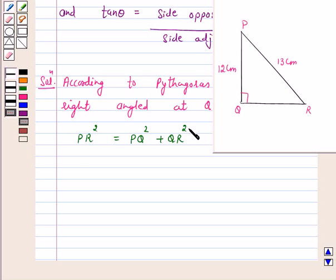13 square is equal to 12 square plus QR square. This implies QR square is equal to 13 square minus 12 square.